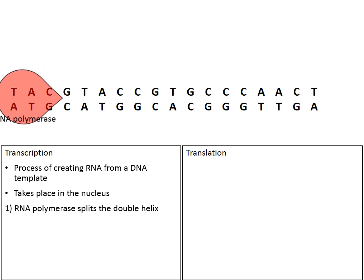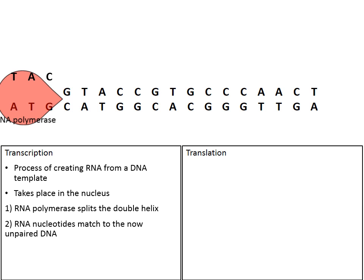RNA polymerase is going to act like a pair of pliers and pry apart the A from the T, the C from the G. It breaks the hydrogen bonds that hold the DNA nucleotides together. Once that happens, RNA nucleotides are going to match to the now unpaired DNA. Notice how in red the letters AUG floated in and matched to the DNA letters TAC, creating a growing chain of messenger RNA in red.